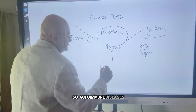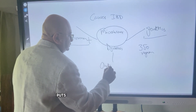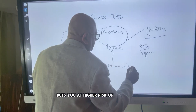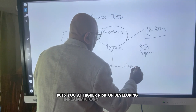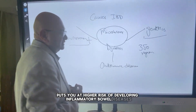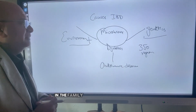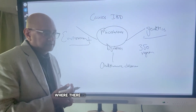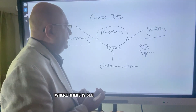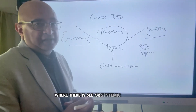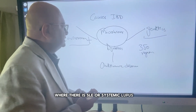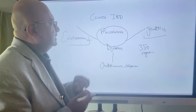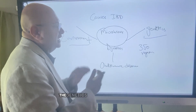Autoimmune diseases also put you at higher risk of developing inflammatory bowel disease. In families where there is rheumatoid arthritis, SLE or systemic lupus, or other such conditions, it can put you at high risk for IBD.